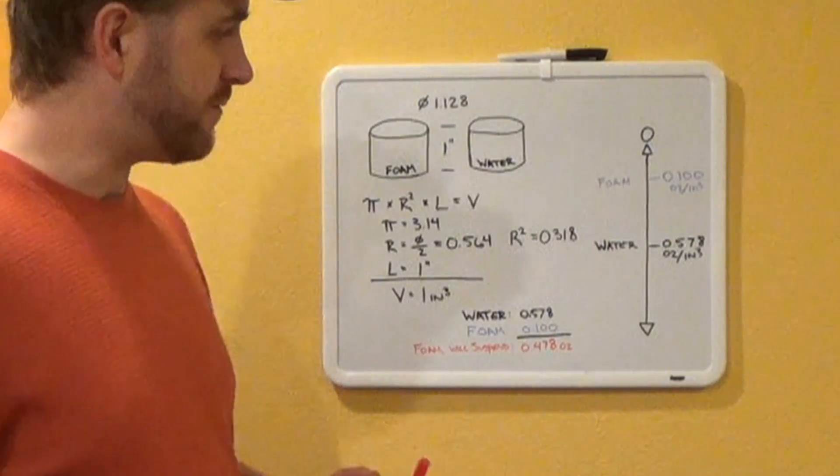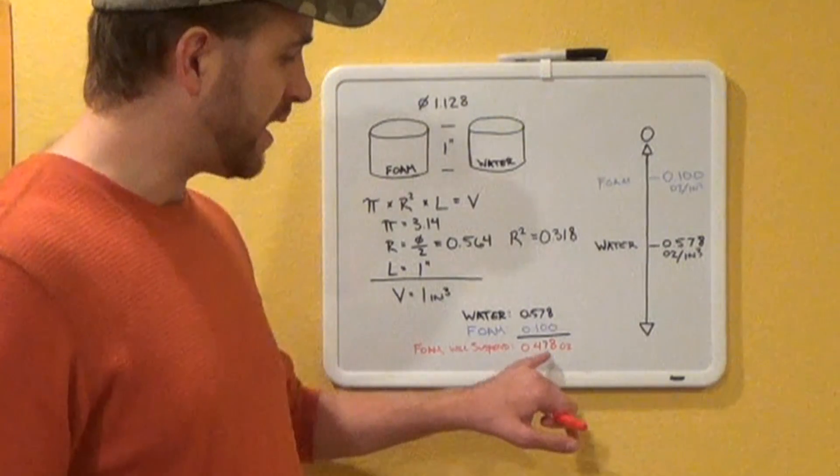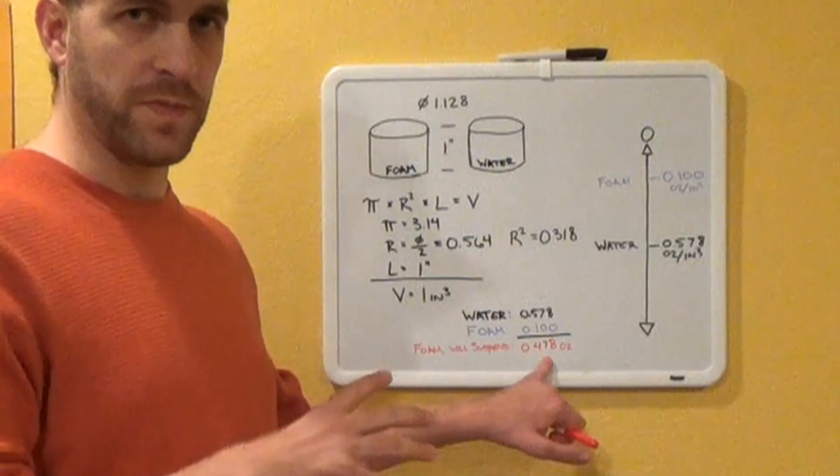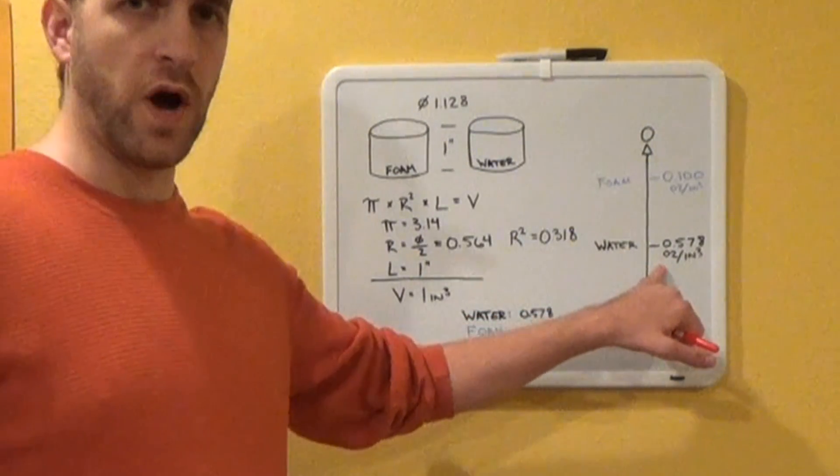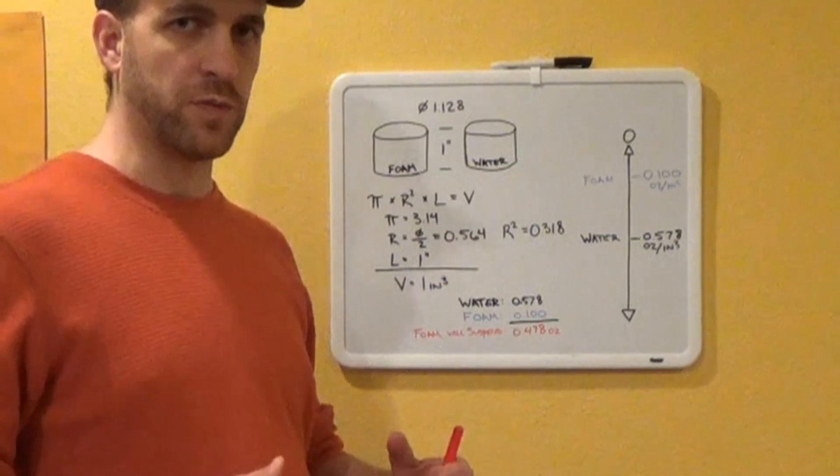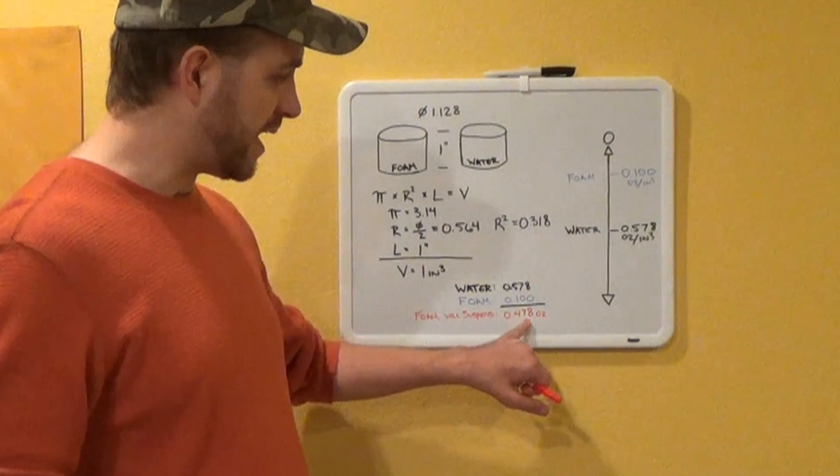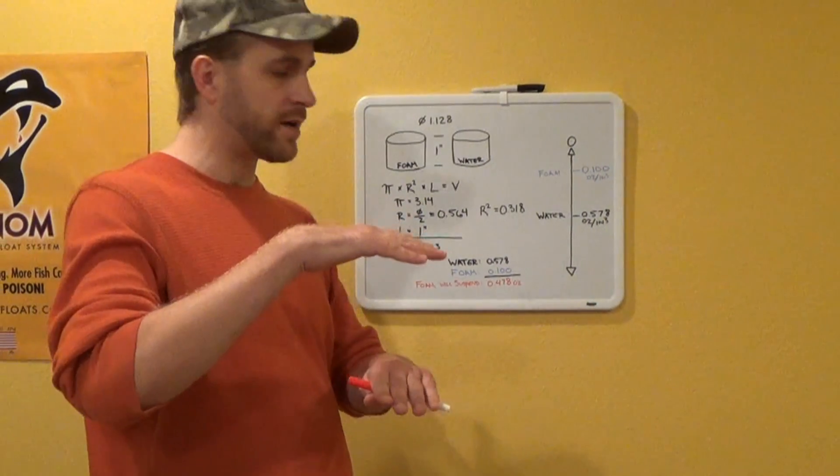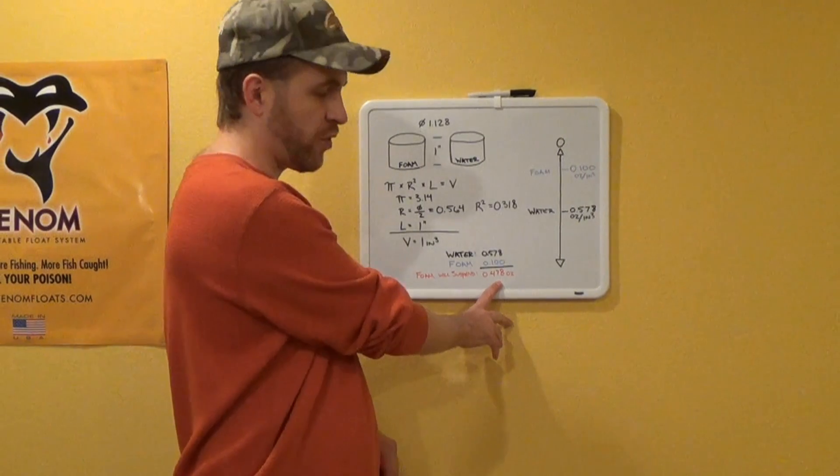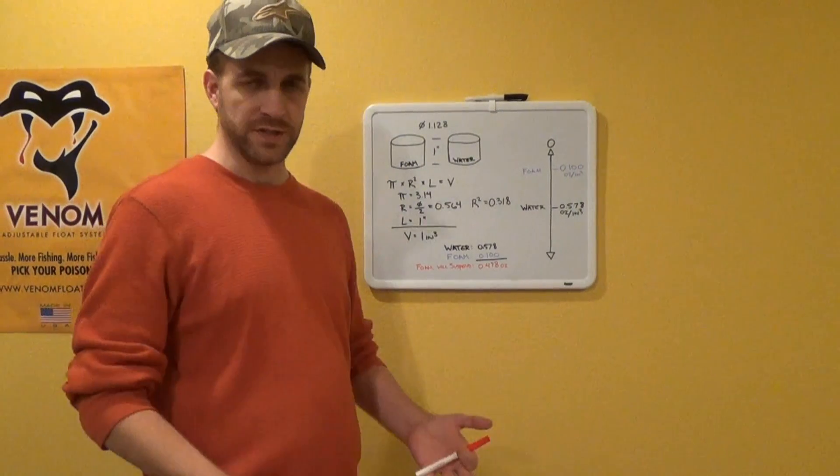So if you're talking about a jig, if we put a jig on this foam at 0.478 ounces, that would bring us exactly to the water weight, which would be neutral buoyancy. So if we had less weight than that, it would be more of a positive buoyancy. You'd have foam sticking up out of the water. Anything heavier than 0.478 ounces, it would sink.